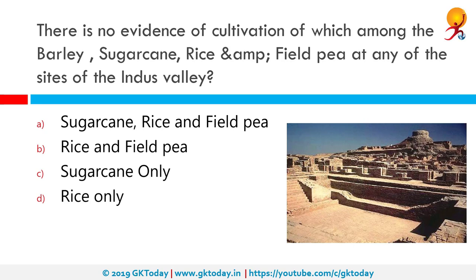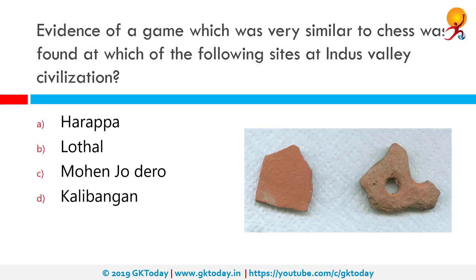There is no evidence of cultivation of which among barley, sugarcane, rice and field pea at any of the sites of the Indus Valley Civilization? The correct answer is sugarcane. Crops that were grown include wheat, barley, peas, melons and sesame. The civilization was the first to cultivate cotton for the production of cloth.